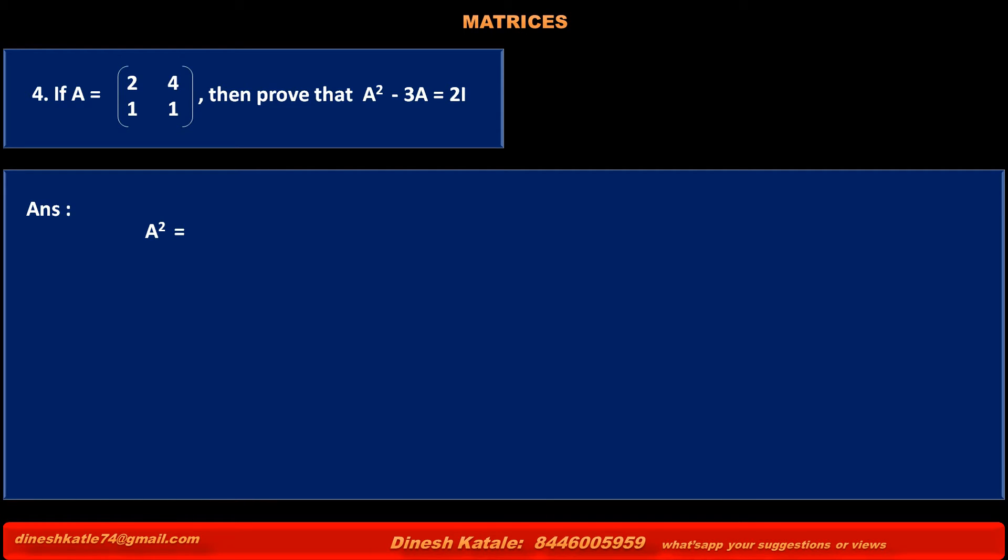Answer: The square of matrix A, that is A², is equal to matrix A [2, 4; 1, 1] multiplied by matrix A [2, 4; 1, 1].